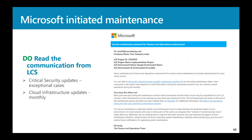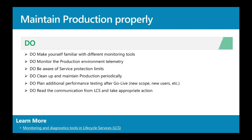For maintenance communications, the same applies as for servicing: communications about infrastructure updates on a monthly basis and security updates in exceptional cases come through LCS. Make sure someone in your organization absorbs this information and takes action when needed. To summarize the Maintaining chapter: be familiar with monitoring tools in LCS and Power Platform Admin Center; proactively monitor production environment telemetry; be aware of service protection limits and throttling; clean up and maintain production data periodically; plan for performance testing when new scope or country go-lives are coming; and read LCS communications and take appropriate action.